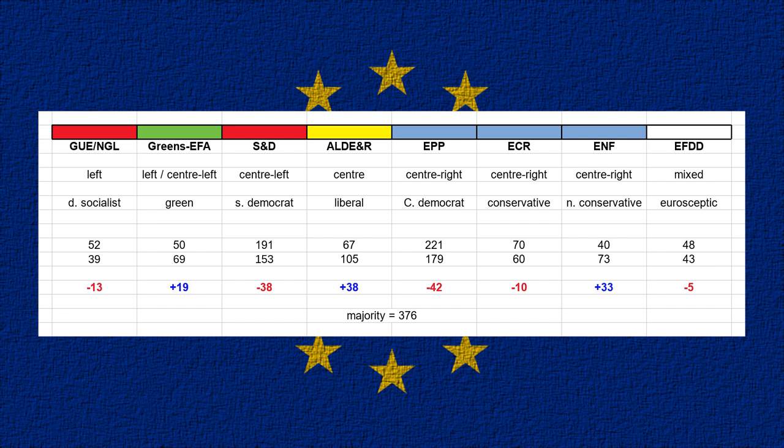Next we have Greens-EFA. There are three different elements in this group: the Green parties, a number of regional separatist parties particularly from Spain and the UK — Plaid Cymru and the SNP are part of this group — and the European Pirate Parties. EFA stands for the European Freedom Alliance. The Pirate Parties are all for free and open internet and protection of privacy.